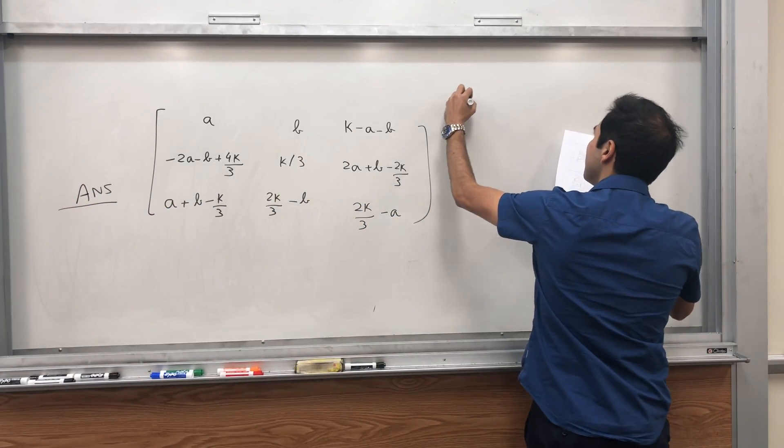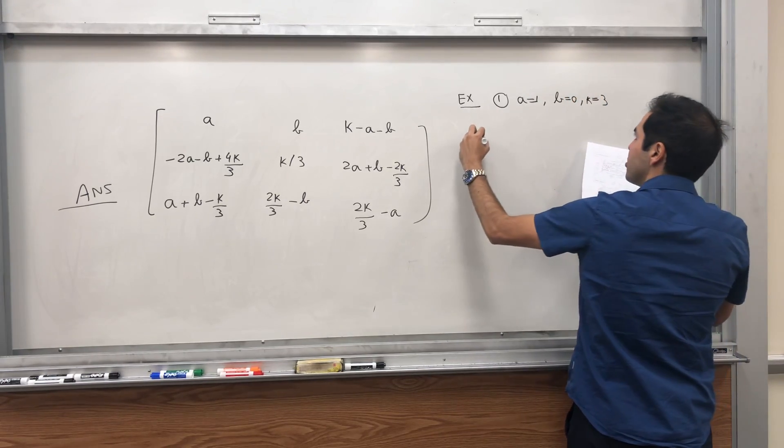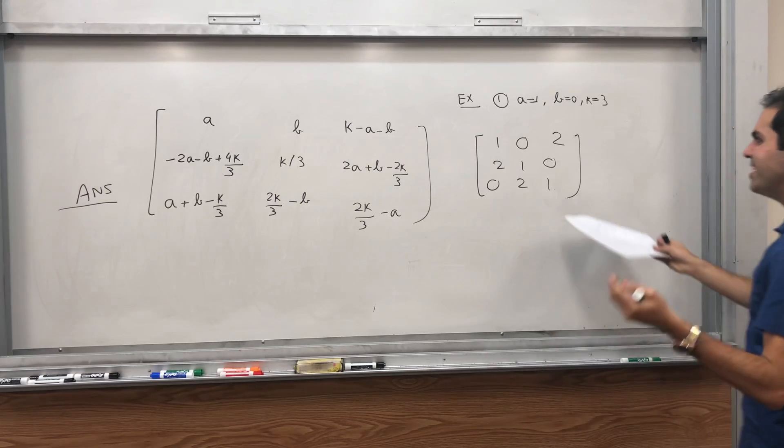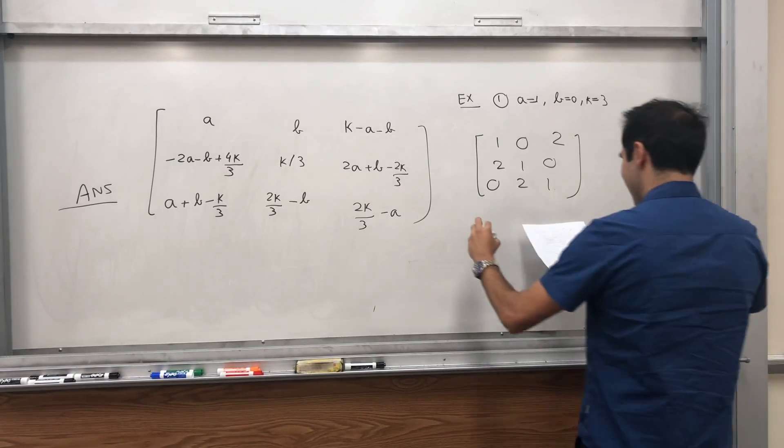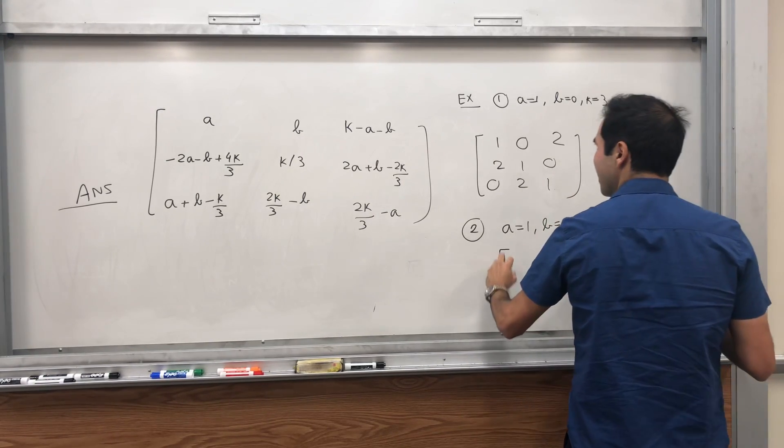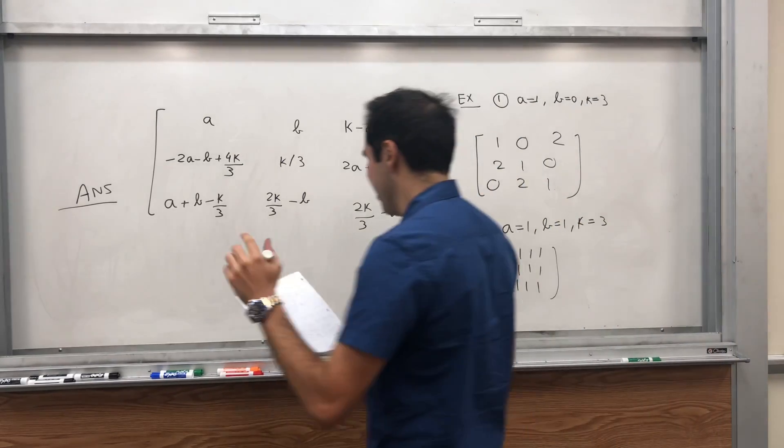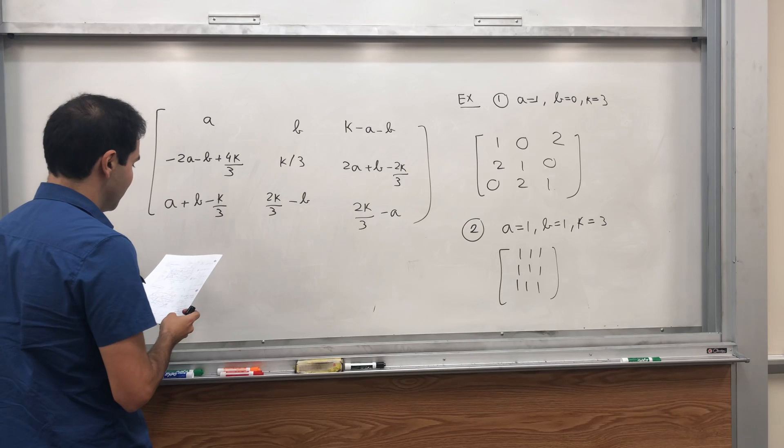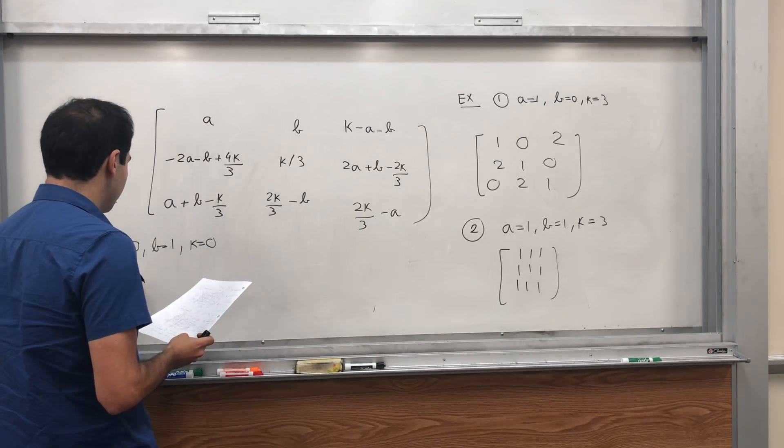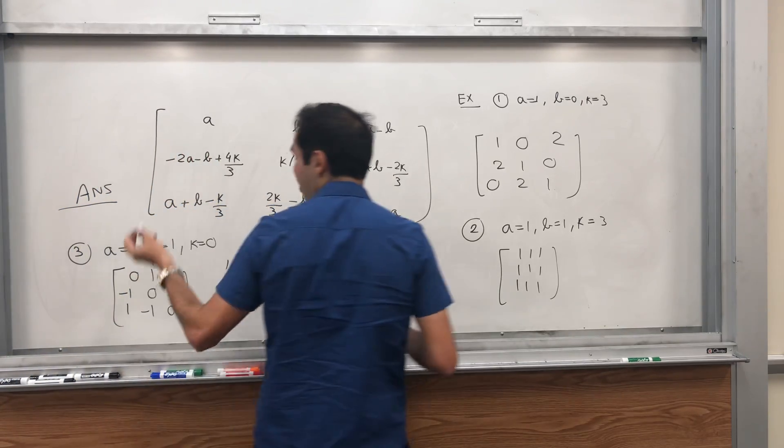And lastly, I just want to give you a couple of examples of what this looks like. If you let a equals 1, b equals 0, k equals 3, then it turns out you get the matrix 1, 0, 2; 3, 1, -2; -1, 2, 0. It's also very nice: a equals 0, b equals 1, k equals 0 - sort of zero sum games - then you get 0, 1, -1; -1, 0, 1; 1, -1, 0. Probably useful in game theory, I don't know.